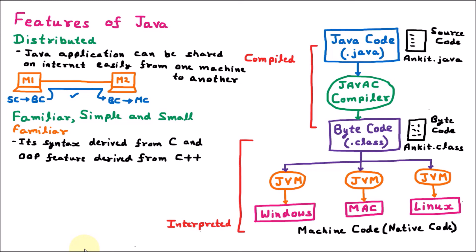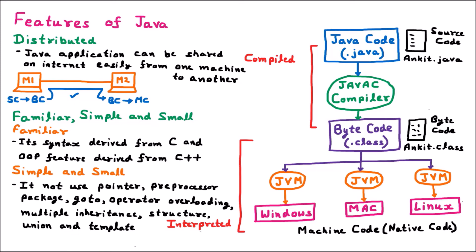Java is simple and small because many concepts that are problematic in C and C++ have been removed. Java does not have pointers, preprocessor directives, preprocessor packages, goto, operator overloading, multiple inheritance, structures, unions, or templates. Because of that, Java is simple and small.